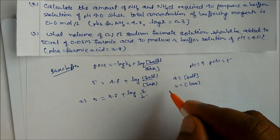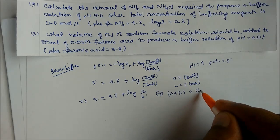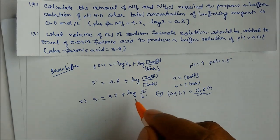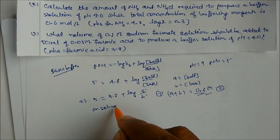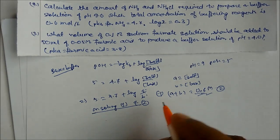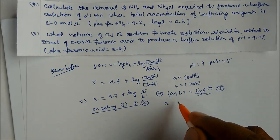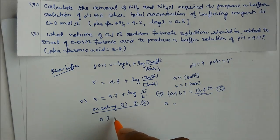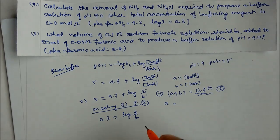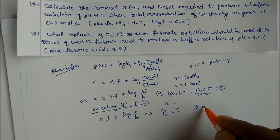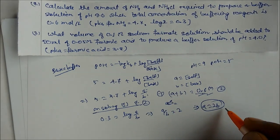Also, a + b = 0.6 mol/L (total concentration given). From the Henderson equation: 5 − 4.7 = 0.3 = log(a/b), so a/b = 10^0.3 ≈ 2, meaning a = 2b. This is equation 1, and a + b = 0.6 is equation 2.